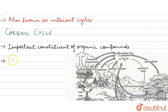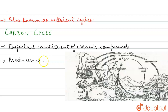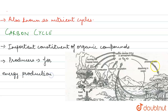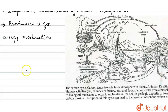Our producers need carbon dioxide so that they can produce energy. As the cycle proceeds, there are consumers.